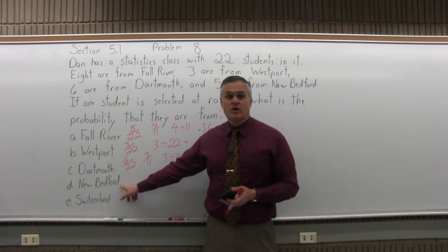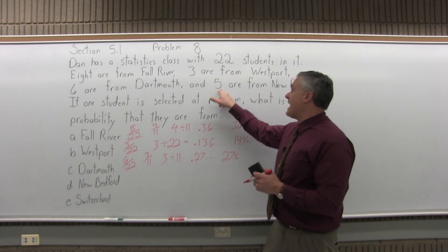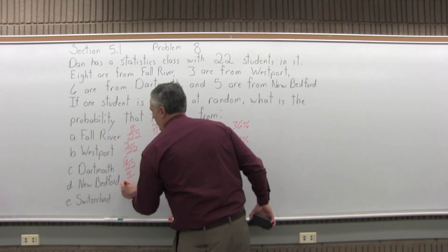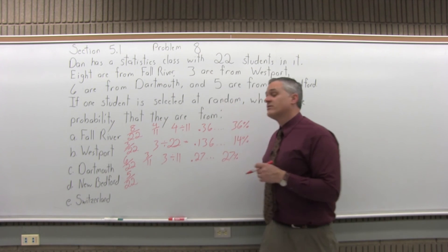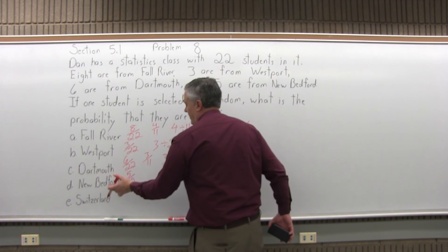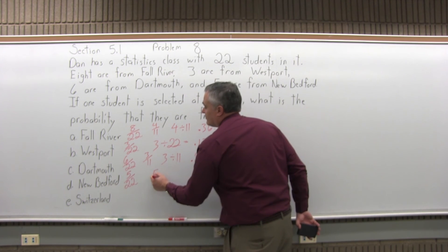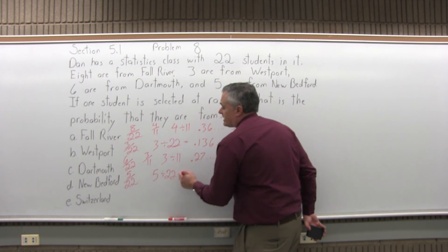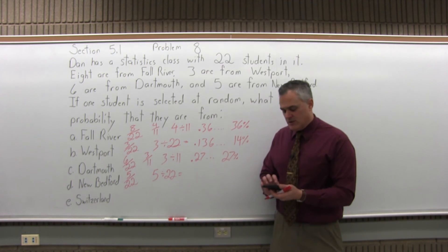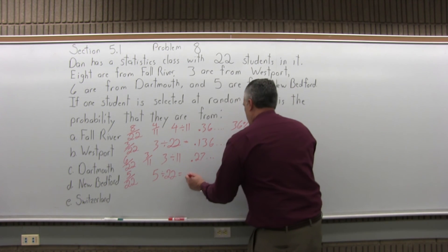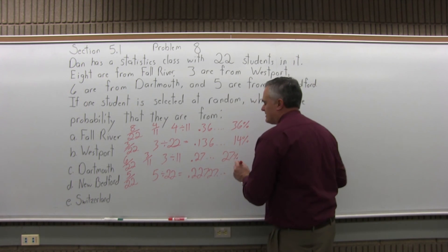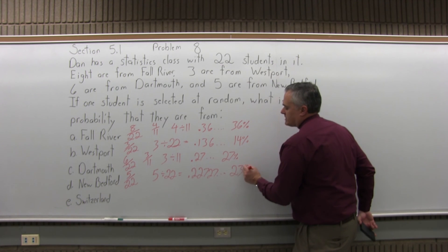New Bedford. What's the probability that a student would be from New Bedford? Five students in the class are from New Bedford out of 22 altogether. So the probability that one randomly selected student would be from New Bedford would be 5 over 22. Five from New Bedford out of 22 altogether. The answer is good just like that, five over 22. This one doesn't reduce. If you like to have a decimal answer instead of a fraction, you can get one. Five divided by 22 gives me .227272727. So if you round it, it's almost a 23% probability.